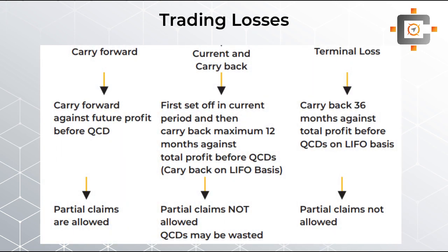Let's start with trading losses. Trading losses have three options: first, the current year and carry back option; second, the carry forward option; and third, the terminal loss. The terminal loss is only possible in a cessation year. For a normal year there are basically only two options: current year and carry back, and the carry forward option. Both of these options have already been covered in the income tax chapter, so we almost know what will happen.